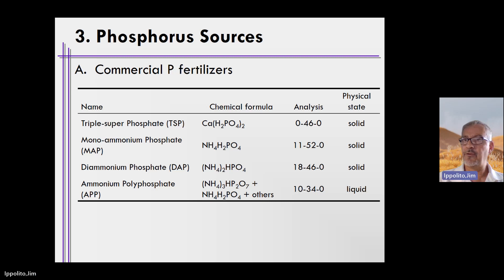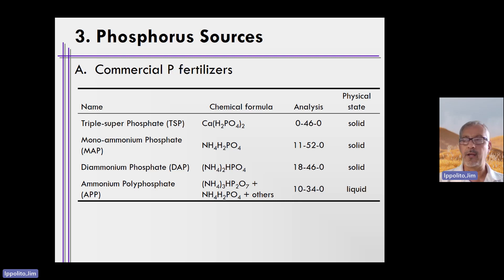Then we have ammonium polyphosphate, which is a liquid phase. Its chemical composition does vary a little bit, but its analysis is 10-34-0.